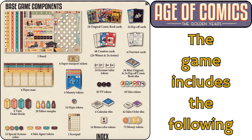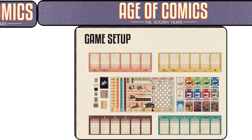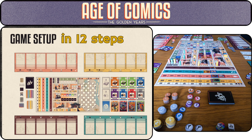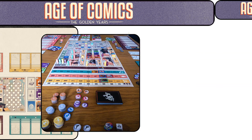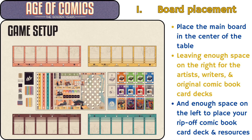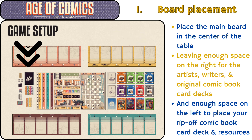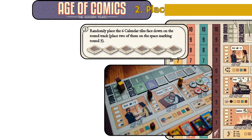The game includes the following base game components. Let's go through the game setup in 12 steps. Step 1: Place the main board in the center of the table, leaving enough space on the right for the artists, writers, and original comic book card decks, and enough space on the left to place your rip-off comic book card deck and resources.